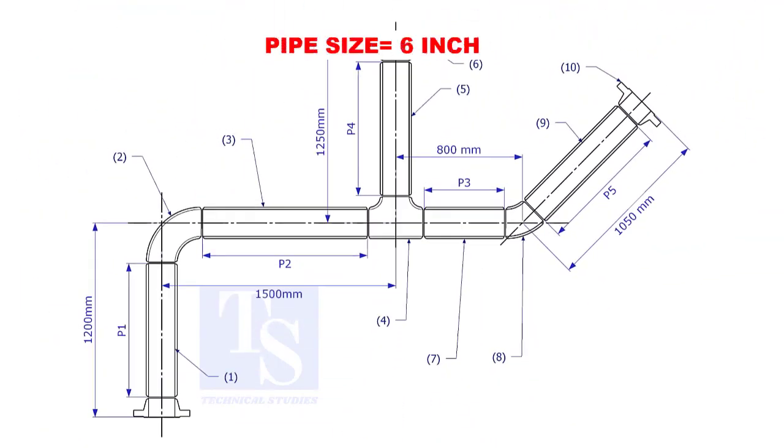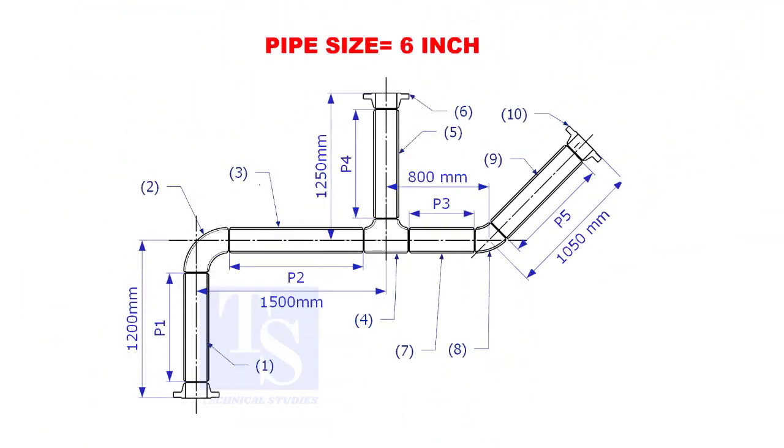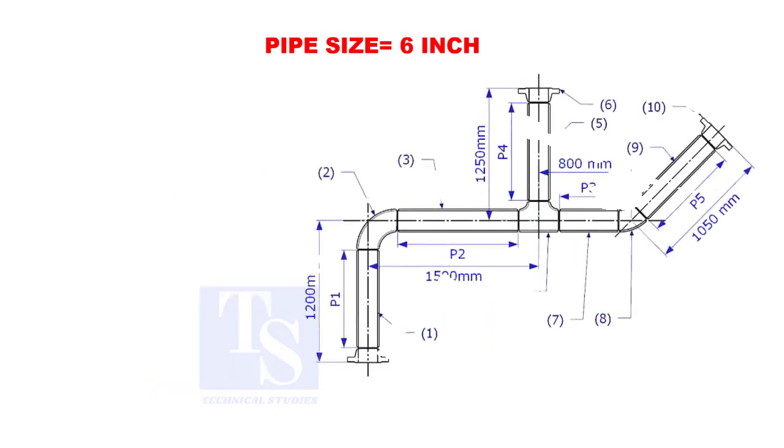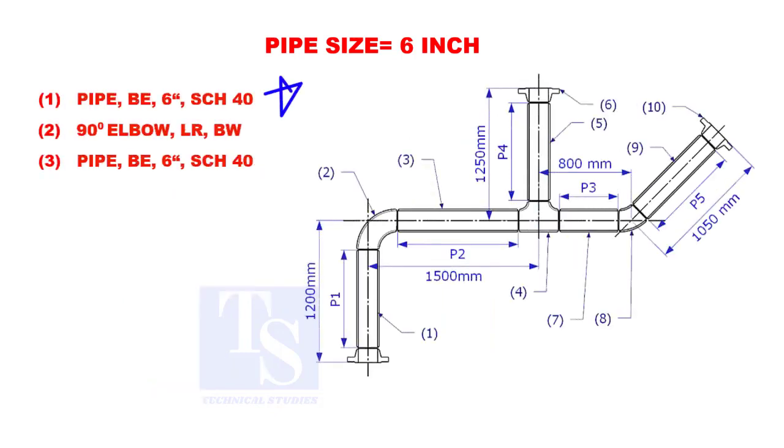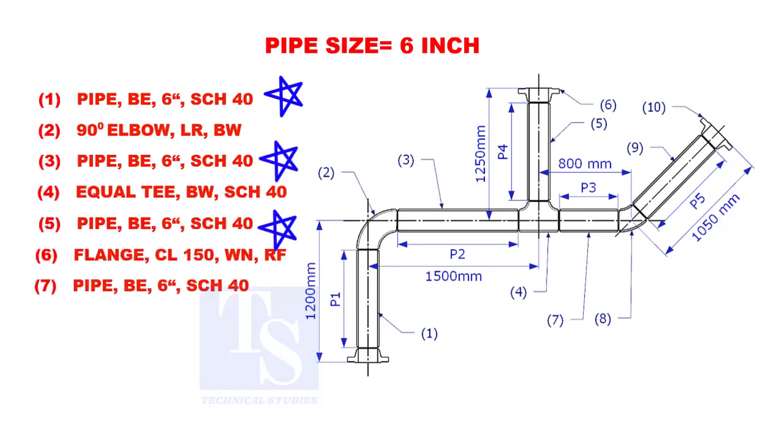Assume that the pipe size is 6 inches. Item numbers 1, 3, 5, 7, and 9 are pipes.